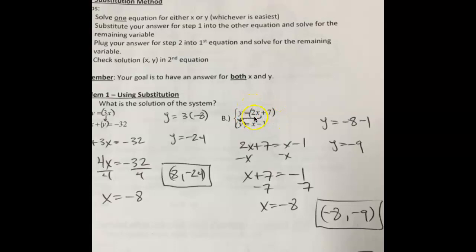We're substituting a fairly abstract value in for y — or we might substitute for x — but either way, substituting in a fairly abstract value. Once we do that, 2x plus 7 equals x minus 1. You can see I solved the equation through all the steps, got x equals negative 8, and then went back to the bottom equation. Go back to one of the original equations, substitute your answer in for x, and get the other variable y. Substitute negative 8 in for x: y equals negative 8 minus 1, then y equals negative 9. Then you have your answer x comma y.